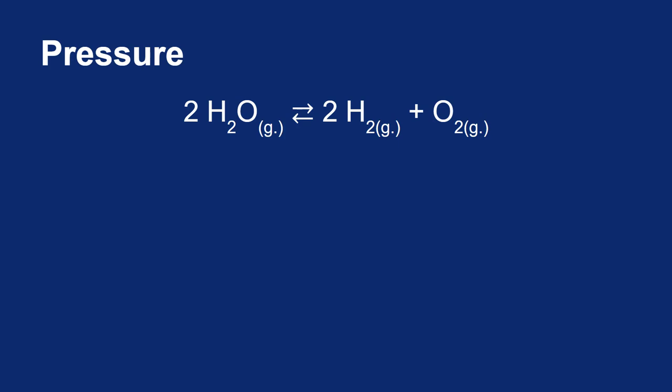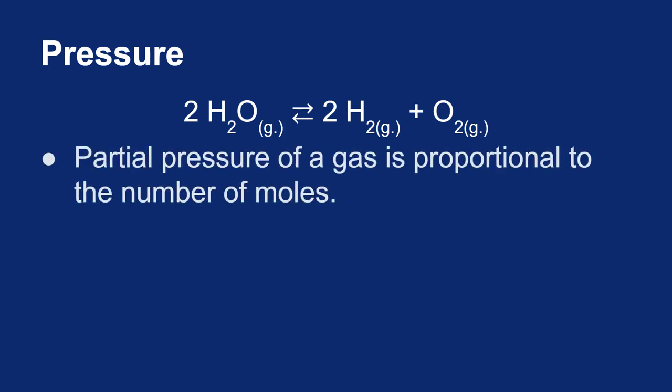We know that we can write the equilibrium expression in terms of concentration, but in this mixture of gases that we'll have, the partial pressure of each of the gases is proportional to the number of moles of gases present. As long as the gases are in the same volume container and at the same temperature, that will be true. If the partial pressure is proportional to the number of moles, the partial pressure will also be proportional to the concentration.